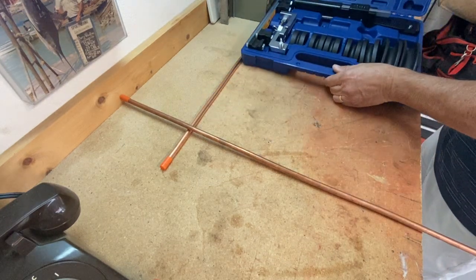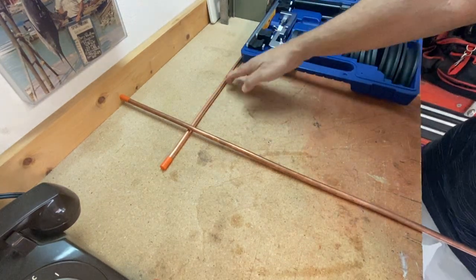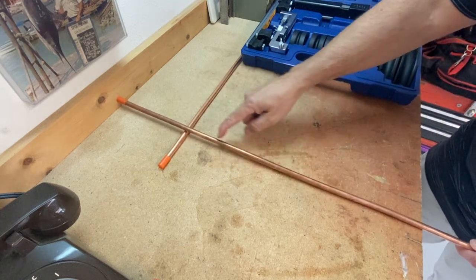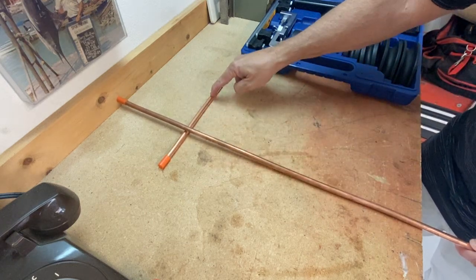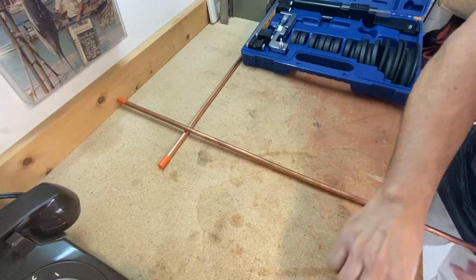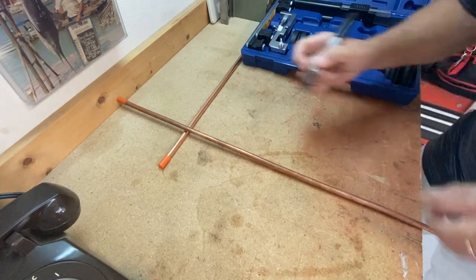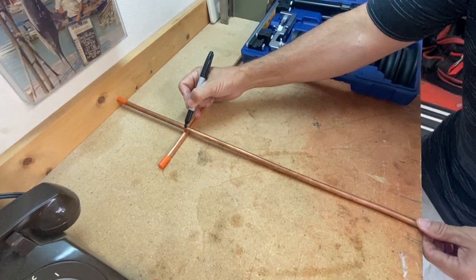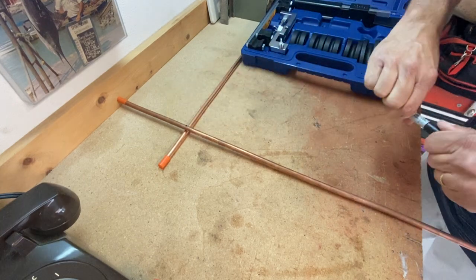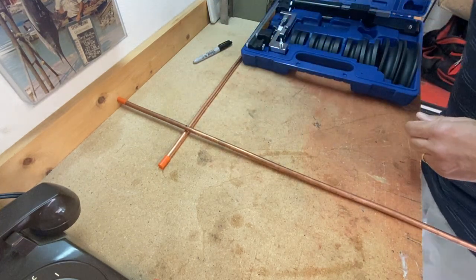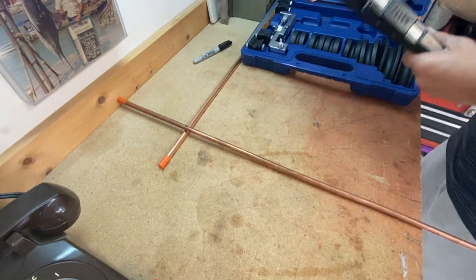So when you're planning this out, let's say you had a piece of copper here and another one coming here and you wanted to bend this copper to meet with this one. What you would do is put a mark right where you want the top of the bend to be. That's your planning stage.